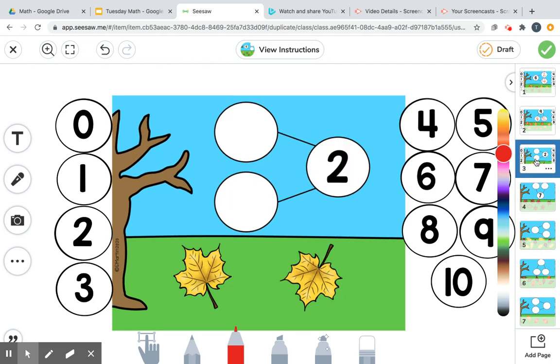Let's do our next leaf problem. Oh, I just got two little leaves down here. That's my whole, my two. So here's my parts. One leaf and one leaf makes two. That one was easy.